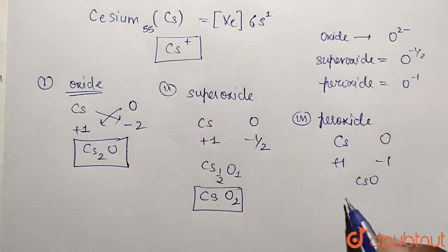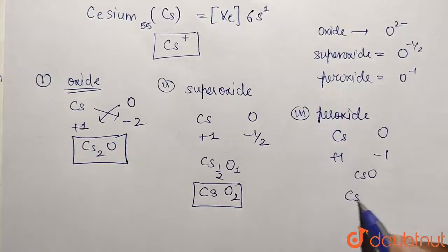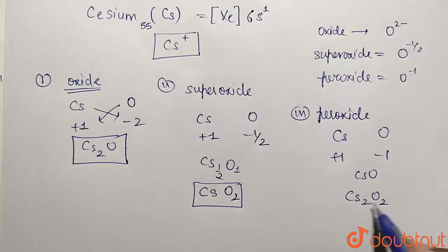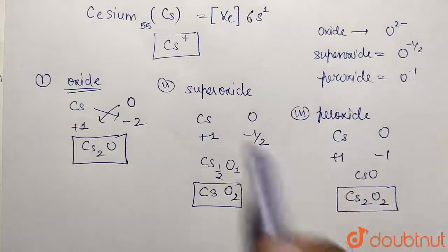It can also be represented as Cs₂O₂ because it is of the same form. So these are the respective solutions for the given question: this is peroxide, this is superoxide, this is oxide. Thank you.